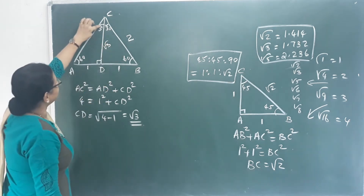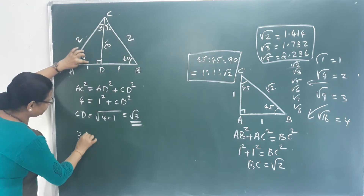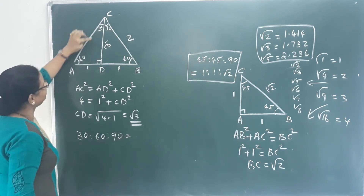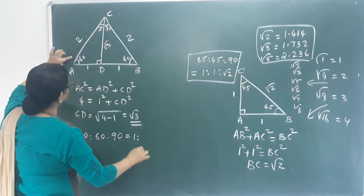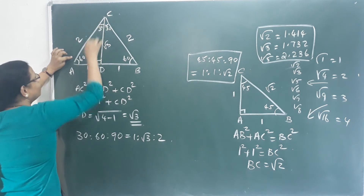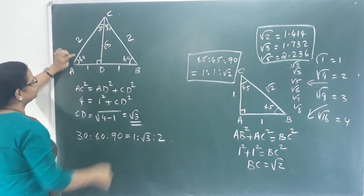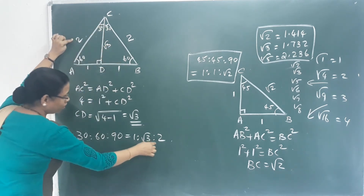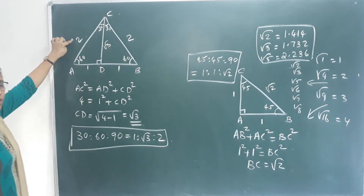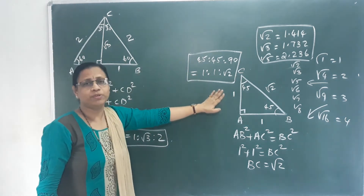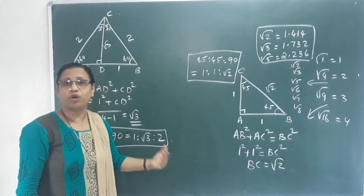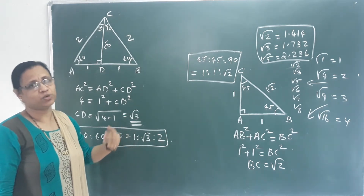You can see here: the 30-60-90 triangle. The side opposite 30 is 1, the side opposite 60 is root 3, and the side opposite 90 is 2. This is the second ratio. We need to memorize these two ratios by heart, because in the next year we will study trigonometry. These two ratios are very important.